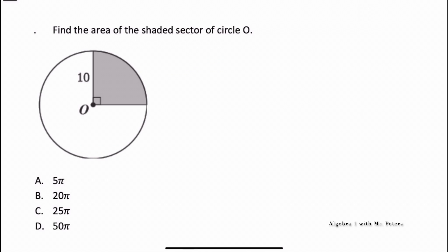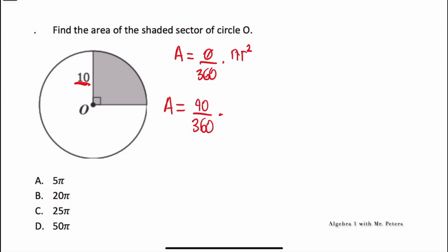This next problem is similar but different — we're looking for the area of the shaded sector. The formula is A = (theta / 360) × πr². We know R, and for theta they gave us a hint: it's a right angle, so it's 90 degrees. The area equals (90 / 360) × π × 10², which reduces to (1/4) × 100π. Our final answer is 25π.